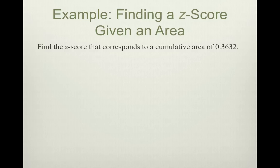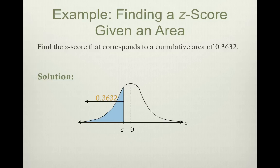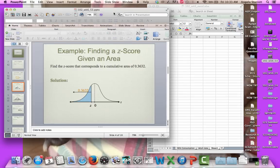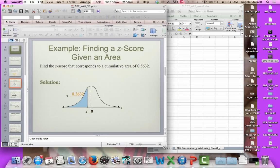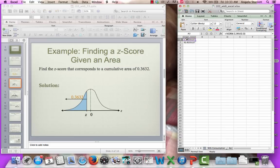Let's find the z-score that corresponds to a cumulative area of 0.3632. The cumulative area, you guys need to know, is the same thing as the area to the left. We want to find the z-score that corresponds to the cumulative area of 0.3632.